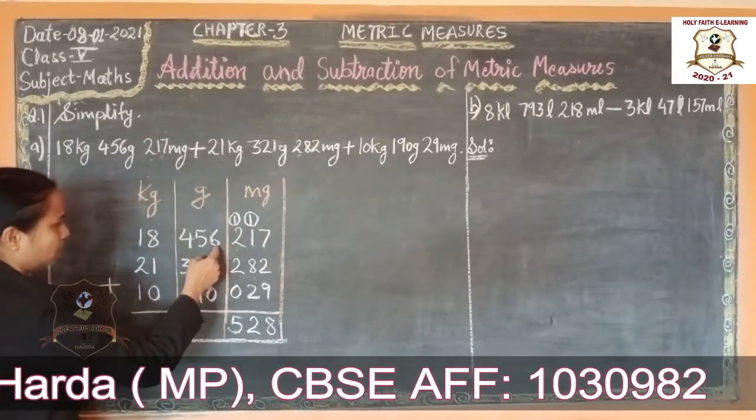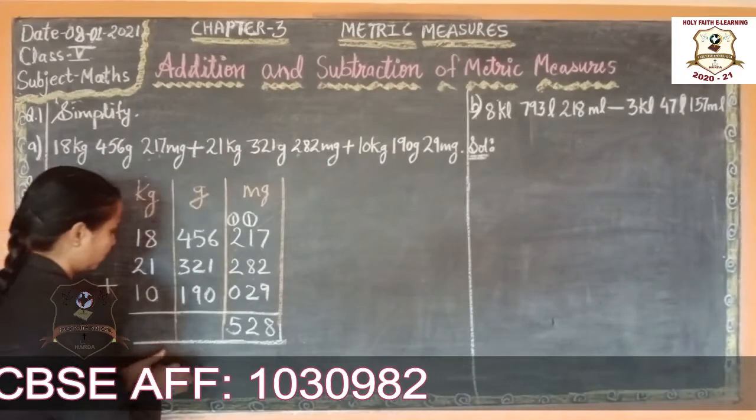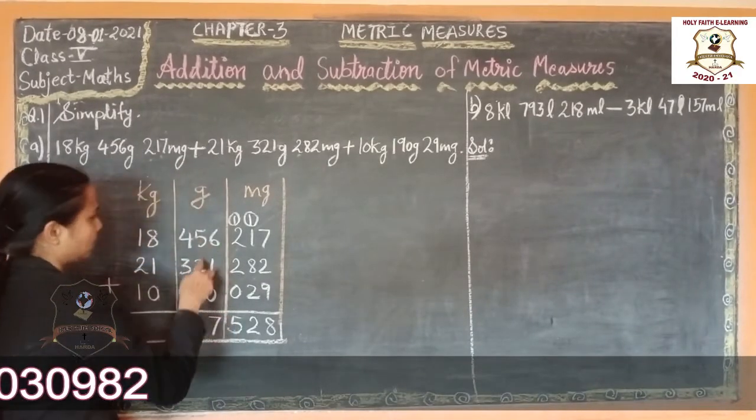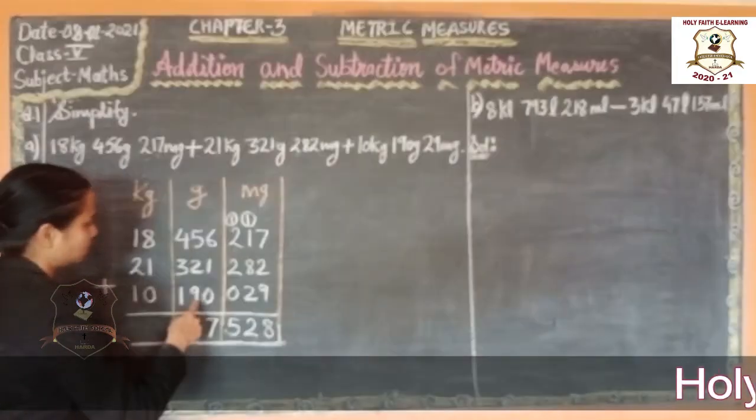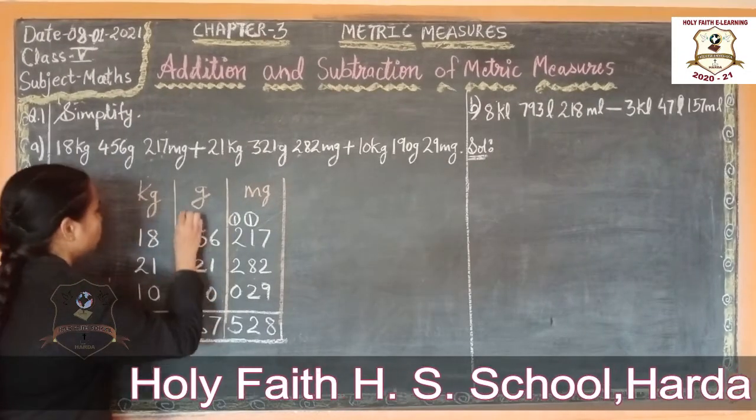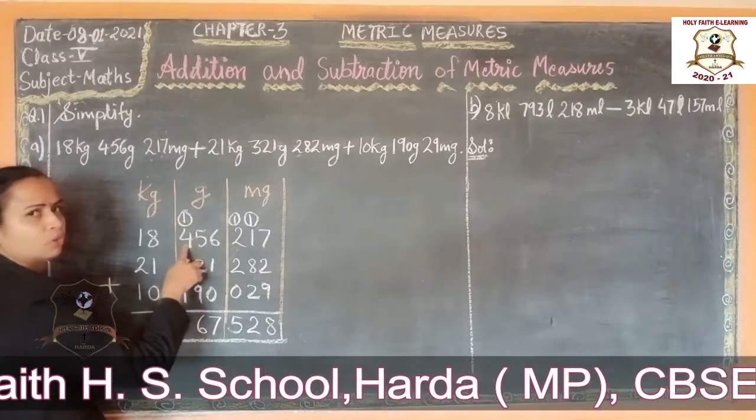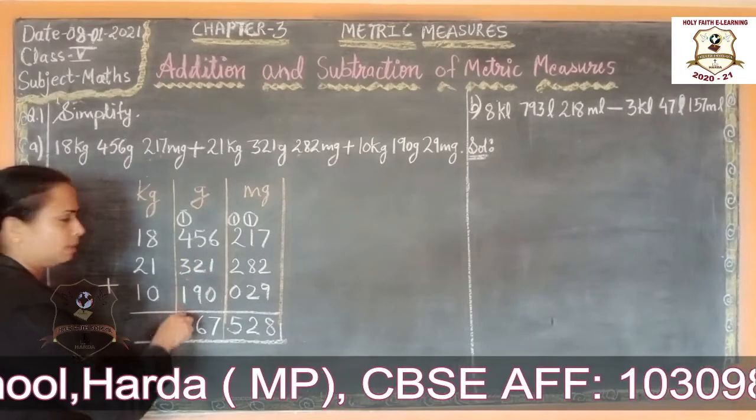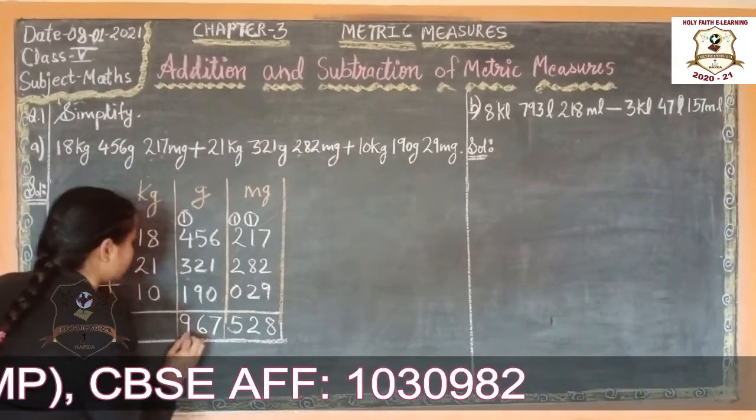Now add 6 plus 1, 7. 5 plus 2, 7. 7 plus 9, 16. So write 6 here. 1 carry over here. 1 plus 4, 5. 5 plus 3, 8. 8 plus 1, 9.